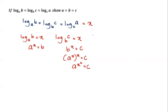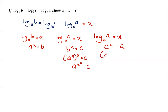The last log is log_c(a) = x, which gives c^x = a. Now c is already known: c equals a^(x²). Substituting gives (a^(x²))^x = a, which simplifies to a^(x³) = a.